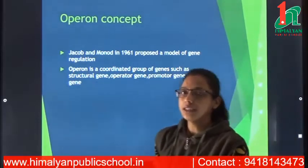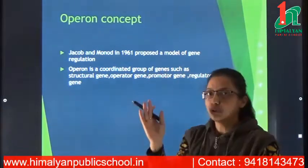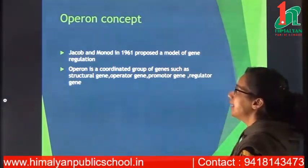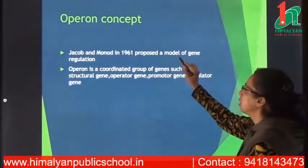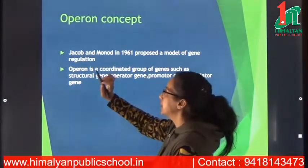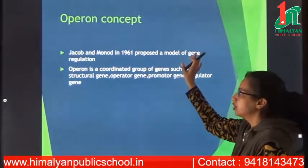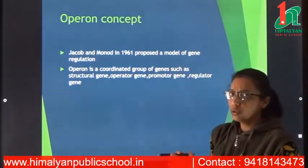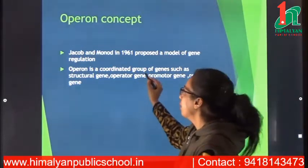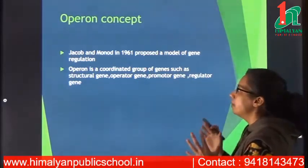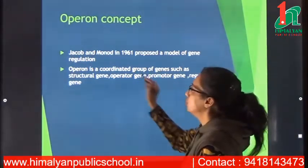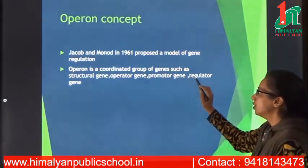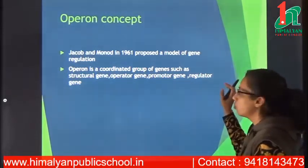Jacob and Monod in 1961 proposed a model of gene regulation. They introduced the concept of the operon — a coordinated group of genes. An operon is a group of genes that work in a coordinated way, consisting of structural genes, an operator gene, a promoter gene, and a regulator gene.